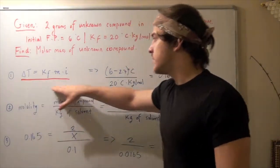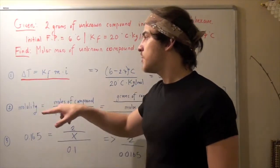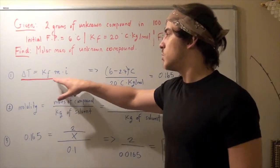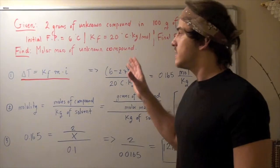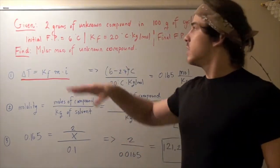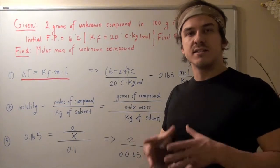In the first step, we write our freezing depression formula, and that basically states that the change in temperature equals our constant times molality times I. I is the van't Hoff factor. And in this case, it's 1, because our unknown compound does not associate into anything. It stays the way it is.